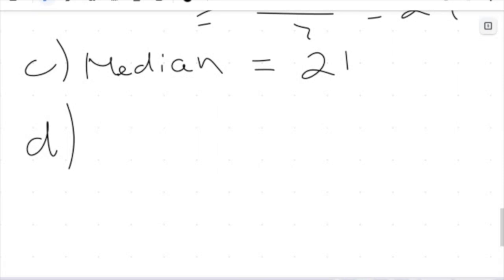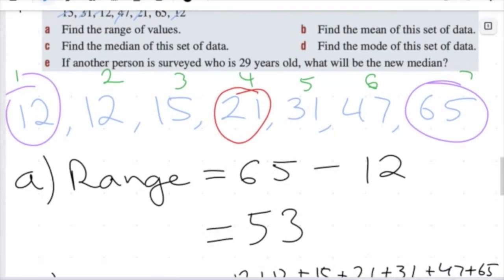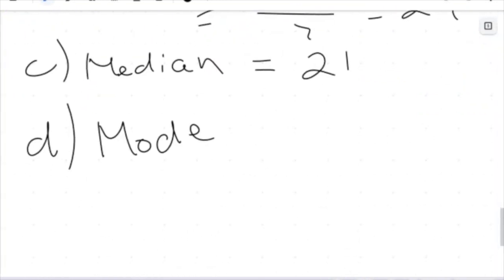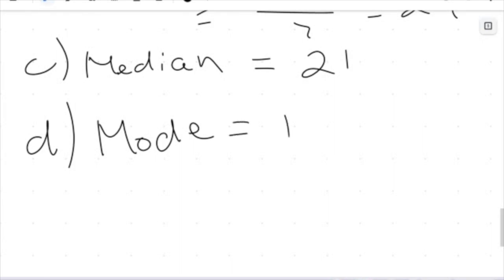Now for the mode — the most frequent value. Looking at these numbers: 65, 47, 31, 21, and 15 each happen once, but 12 happens twice. So 12 is my mode — it's the most common number in the data set.